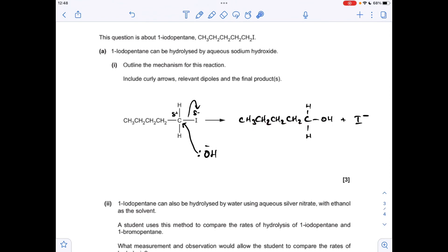So we show that with a curly arrow like that, and we'll just draw up the product. So we get this alcohol here, and don't forget the I-, which is what that would become.